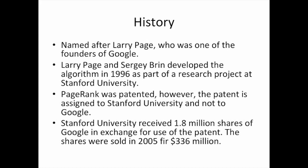PageRank was patented; however, the patent is assigned to Stanford University rather than Google, which is pretty crazy being that that's Google's main algorithm but yet Stanford University owns it. Stanford University did receive 1.8 million shares of Google in exchange for use of this patent, and the shares were later sold for $336 million.